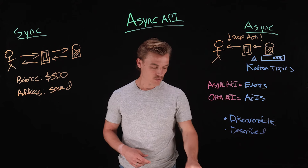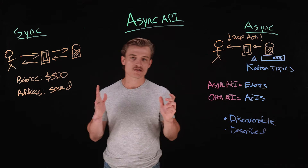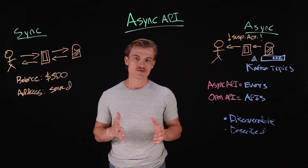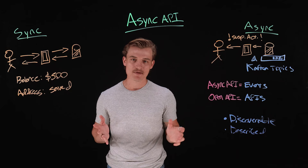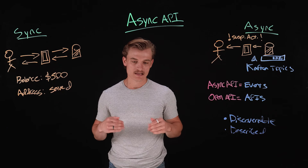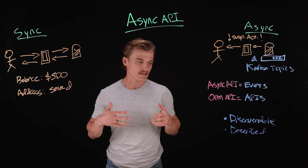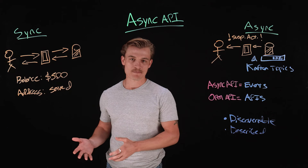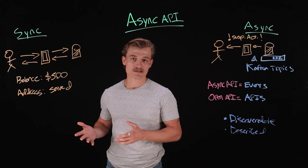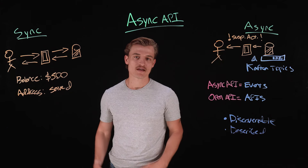So coming full circle, we can use the async API specification as a standard to describe events, and we can use that when we do good API management — managing events across the enterprise.